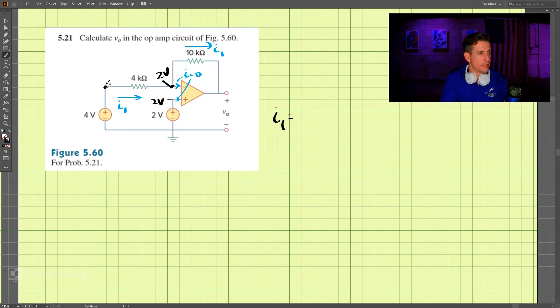Doing this math, we can say that i1 is equal to this voltage, which is 4 volts—that is 4 volts here—4 minus 2 divided by this 4 kiloohm resistor. That's 4 times 10 to the third. And that is also equal to this voltage: 2 volts minus v naught, divided by 10 kiloohms, 10 to the third here.